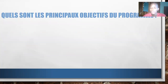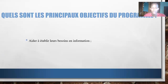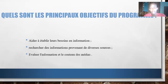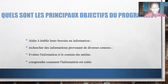First of all, teachers can use Wikipedia to help their students develop their skills on access, evaluation, and creation of information. To do this, we will help teachers to establish their needs for information, help them research information from different sources, evaluate the information and the content of the media, and show how information is created.